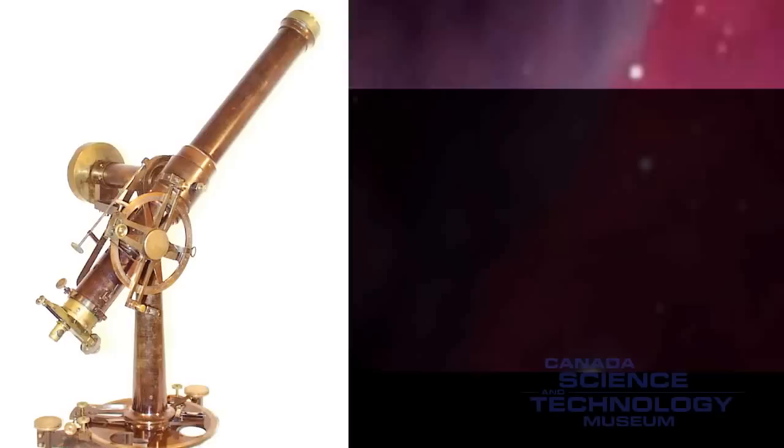Let's take a look at this telescope. The Zenith Telescope was built by the Troughton and Simms Company in London, England, and dates from about 1872. Surveyors used the Zenith Telescope to mark the boundary between Canada and the United States along the 49th parallel in Western Canada.